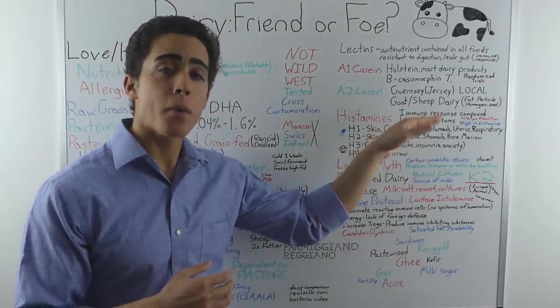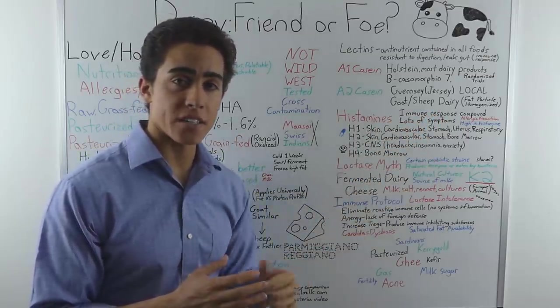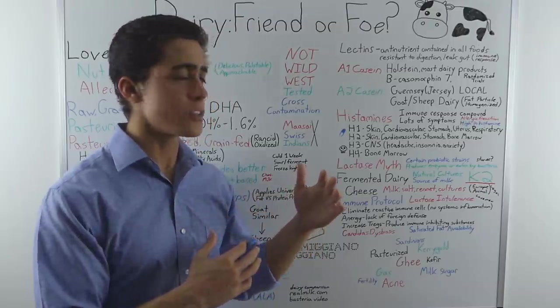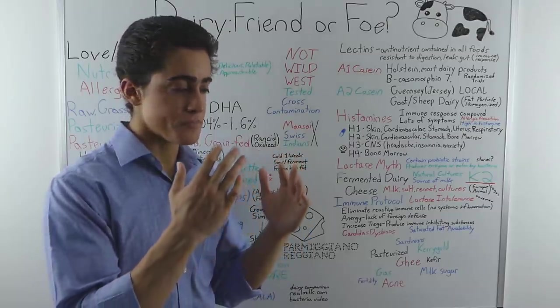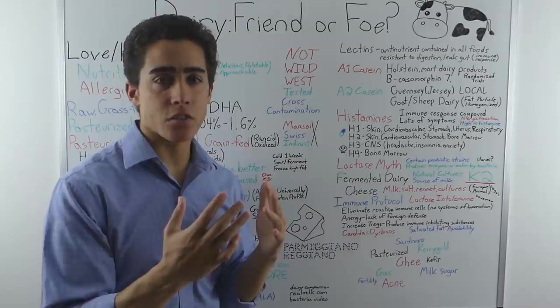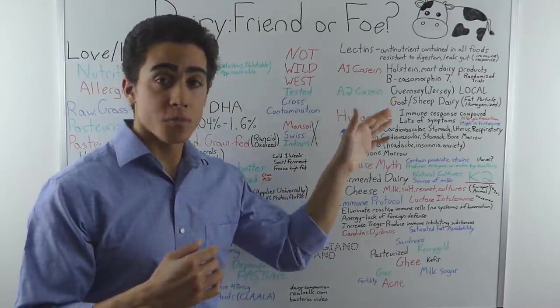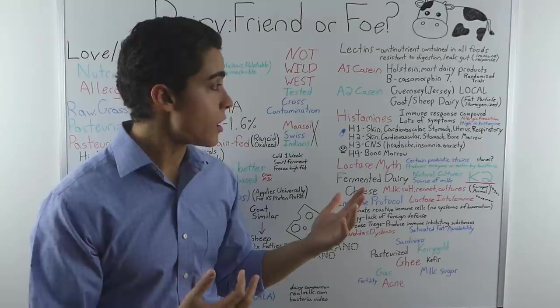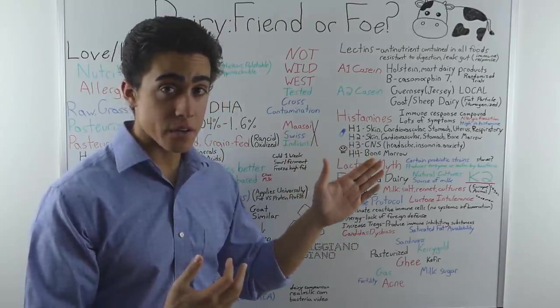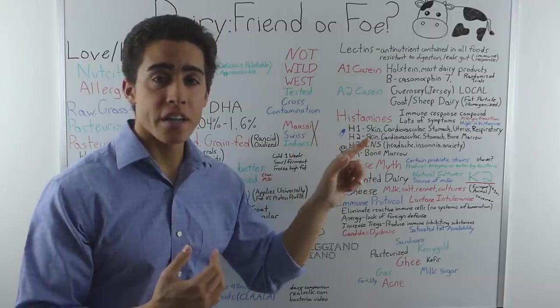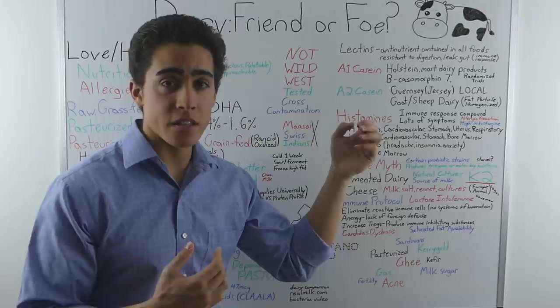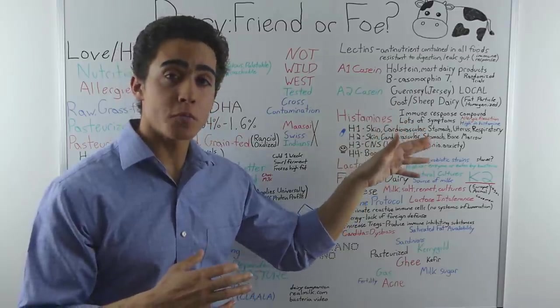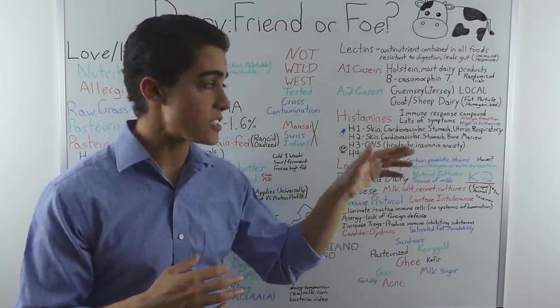And not only are goat and sheep milk inherently A2, therefore less inflammatory, the fat particles in these two milks are naturally homogenized. That means that the fat particles are smaller and they are digested easier. This is different than the homogenization of the cow's milk that we see. That is unnatural and that causes issues. These small fat particles are actually beneficial because when you drink goat milk or sheep milk, it digests much quicker. Goat milk is much better than cow's milk and I believe sheep dairy digests even quicker. I think the fat molecules in the sheep's milk are even smaller than the goat's milk. So, from what I've read, it is assumed that sheep dairy is the easiest digesting form of dairy.